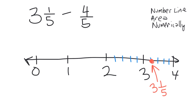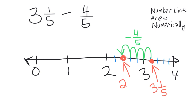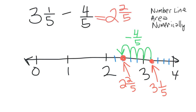I'm going to go back one-fifth, two-fifths, three-fifths, four-fifths. So I went backwards my four-fifths. And where am I at now? Right there is two and two-fifths. So I can see that my answer — three and a fifth take away four-fifths — is equal to two and two-fifths. Right now all we're doing is using a number line.